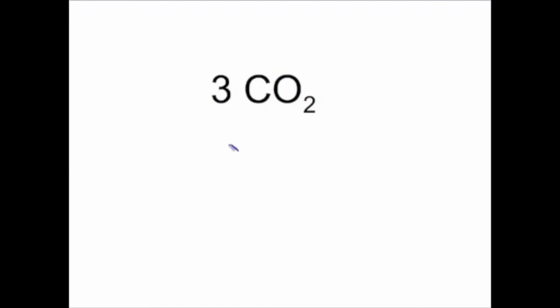Let's now look at carbon dioxide. We see the chemical formula CO2 with a coefficient of three in the front. That tells us there are three CO2 molecules. We have one carbon and two oxygens in each CO2 molecule, but there are three molecules. So, we have three total carbons and six total oxygens.